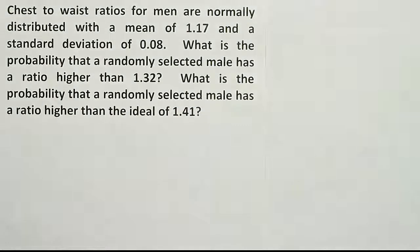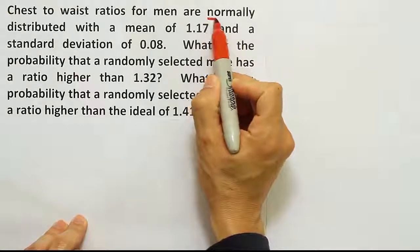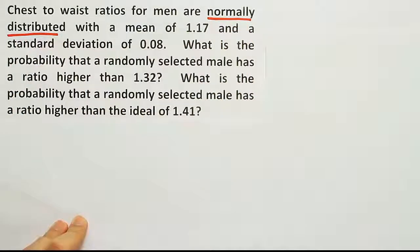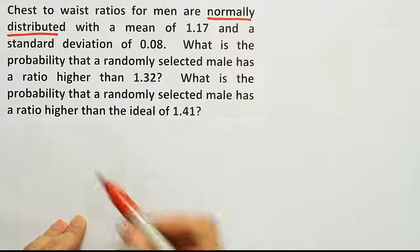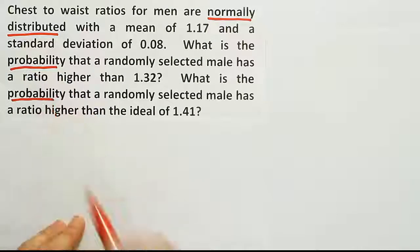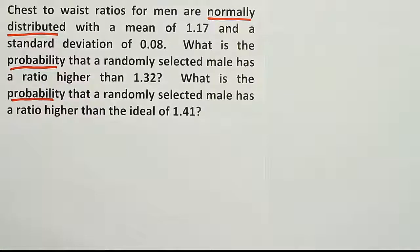Okay, so we have a couple of key phrases here in this problem. Normally distributed tells us that we can use the bell curve to solve the problem. And then they go on to ask us for a probability. Of course they say that twice because we're doing two separate problems in this problem. So let's try to figure out the first one first. We'll use the bell curve to do that.